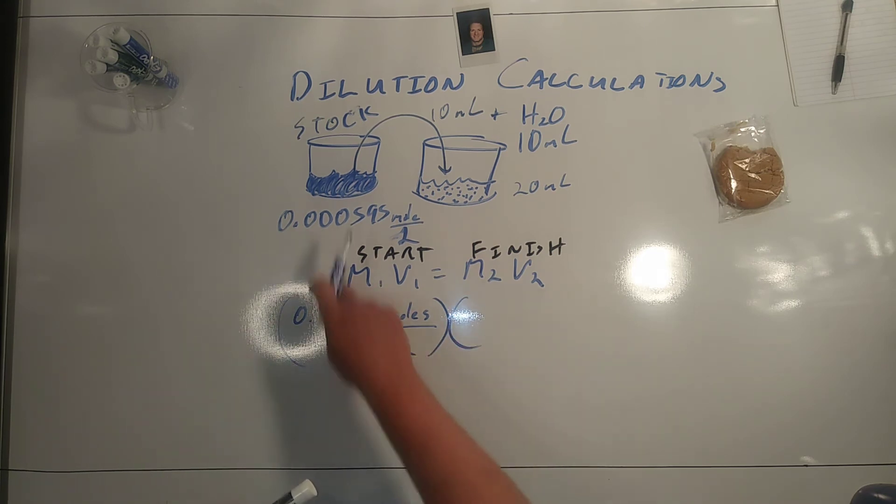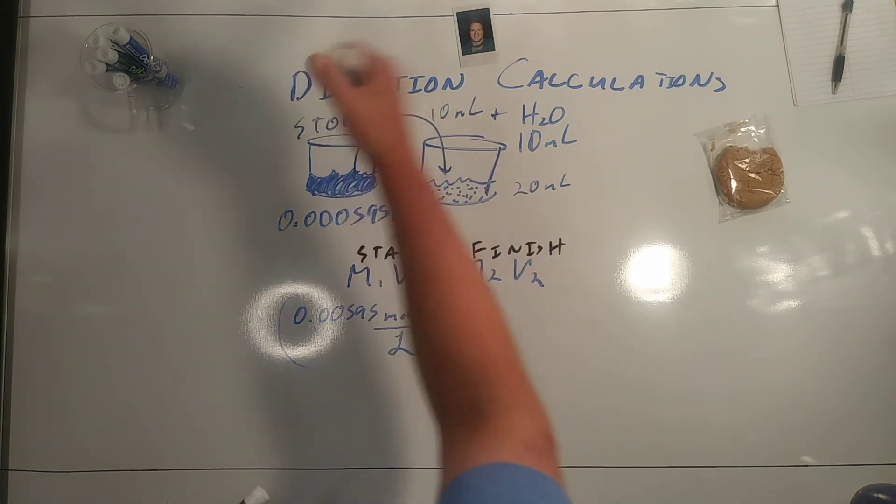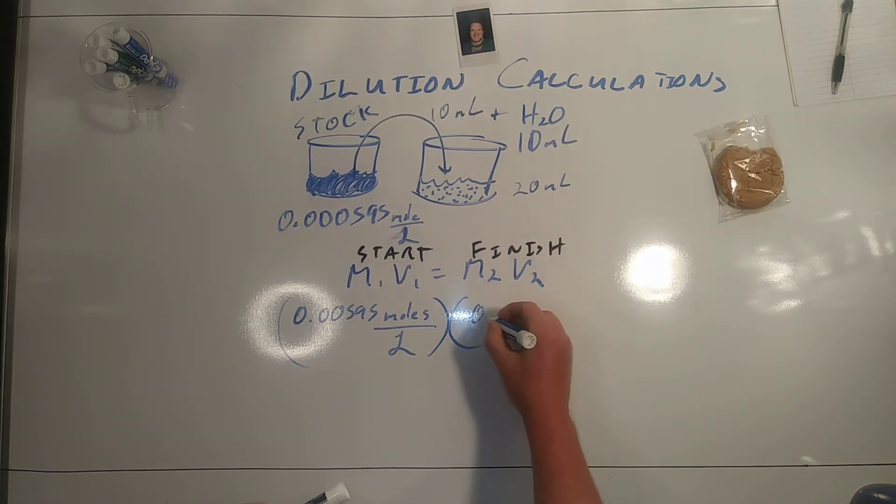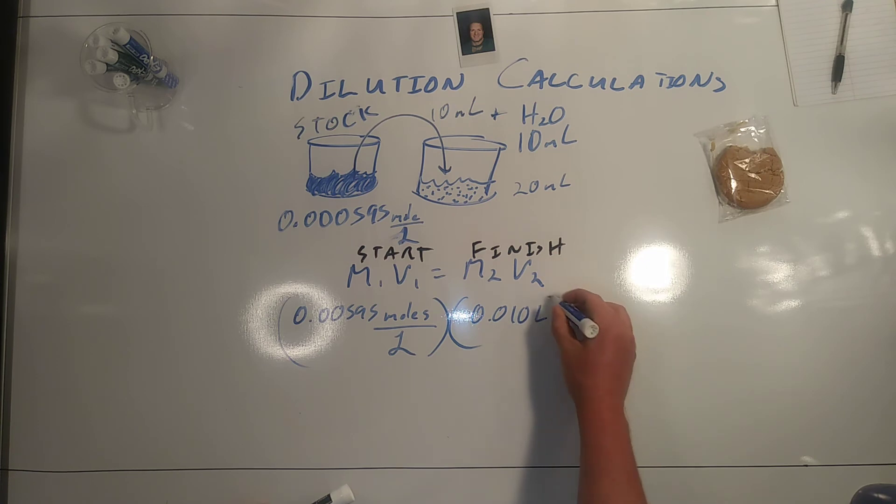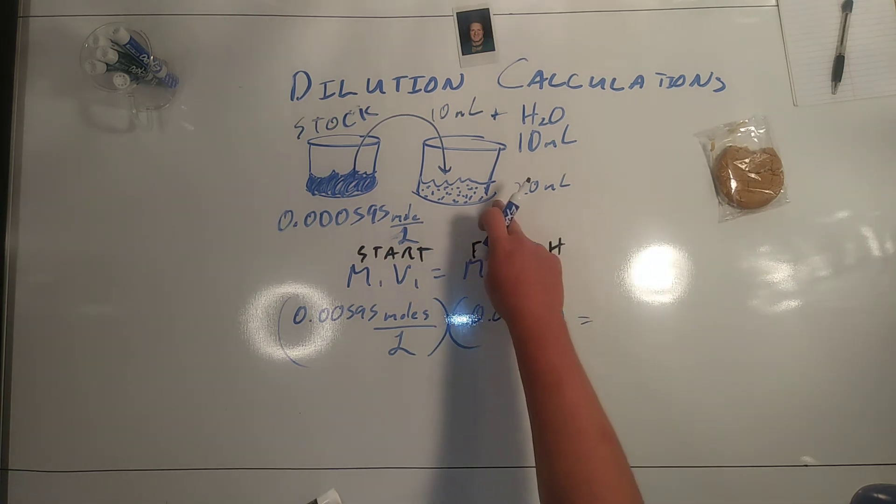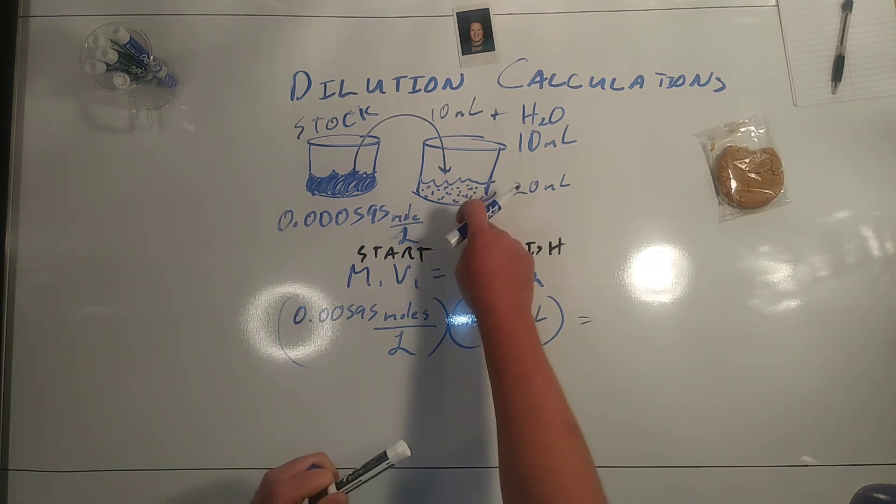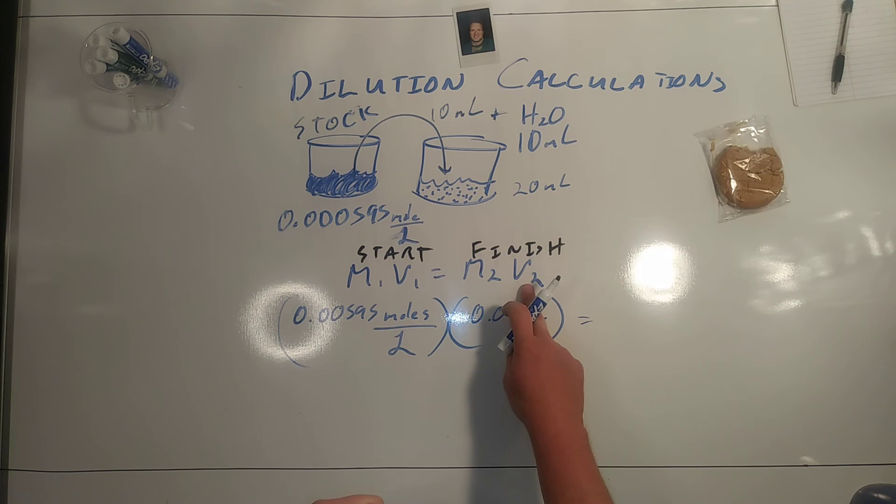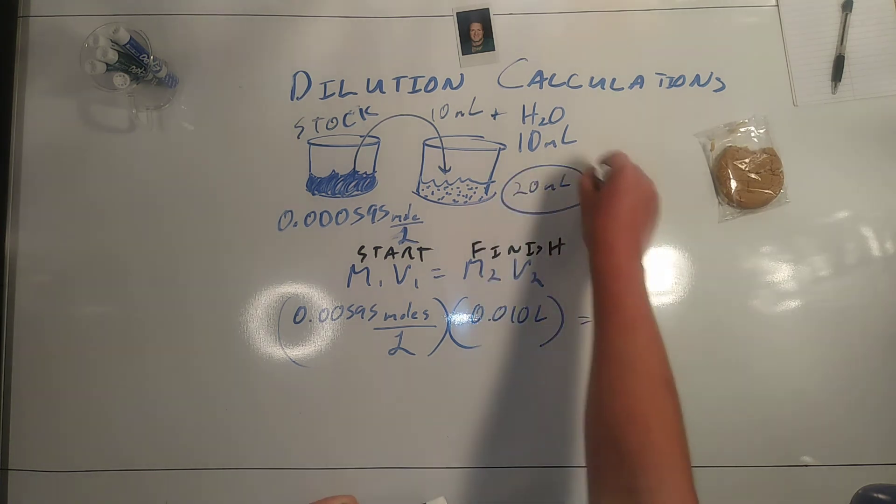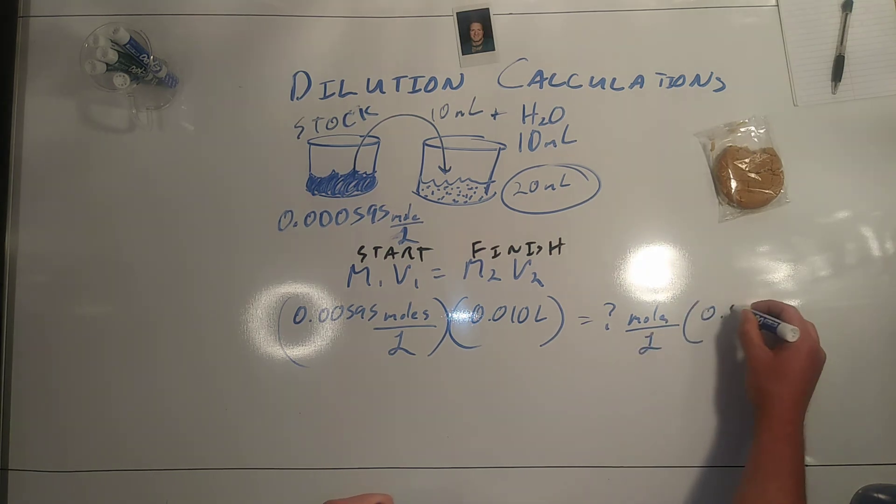Of our original stock solution, 10 milliliters is what we pipetted. The final molarity we know will be lower because the color is less intense, and the final volume we know is 20. I hope you can see it on the edge of the board right there.